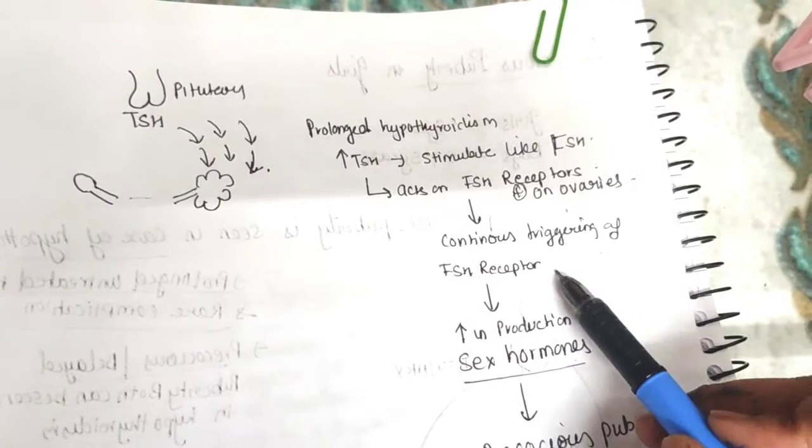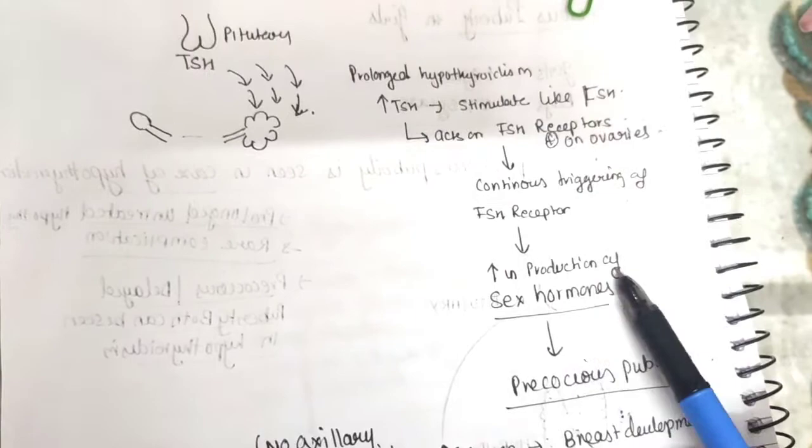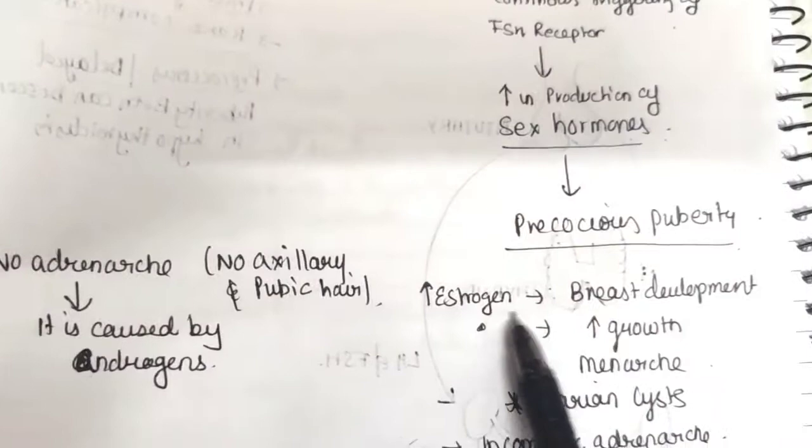There will be continuous triggering of FSH receptors that will lead to increase in production of sex hormones and there will be precocious puberty. Simple as that.